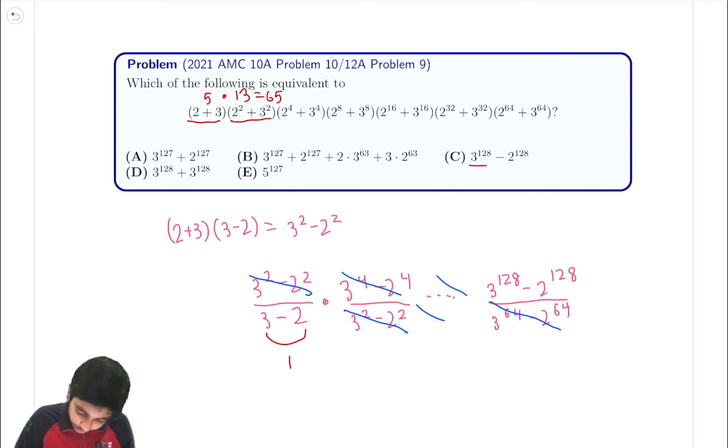But then, again, just like here, instead of, because we're only expanding two terms, instead of 3 to the 128 minus 2 to the 128, is this actually going to be equal to 3 to the 4 minus 2 to the 4? And we can see that 5 times 13 is actually equal to 3 to the 4 minus 2 to the 4.